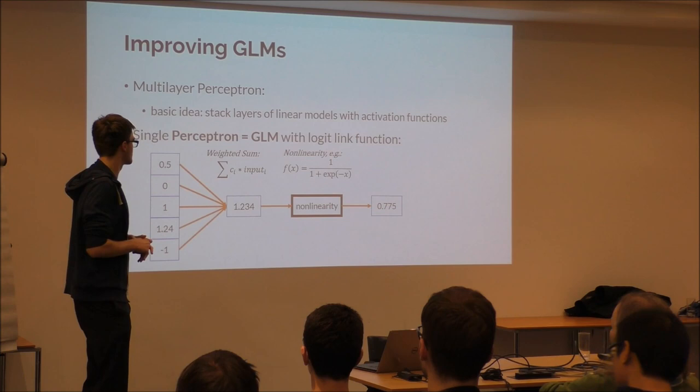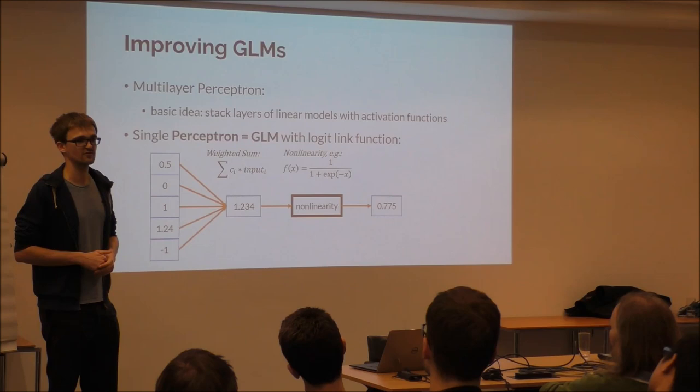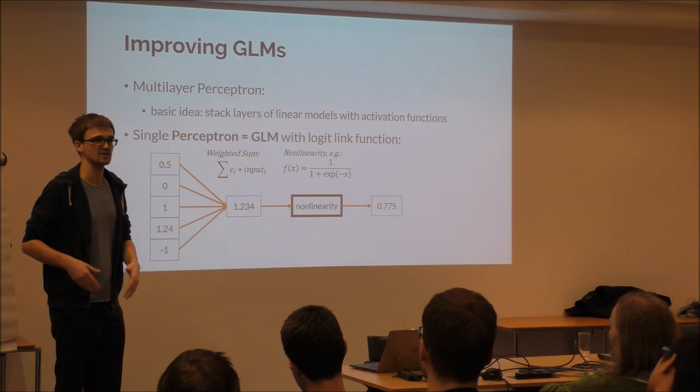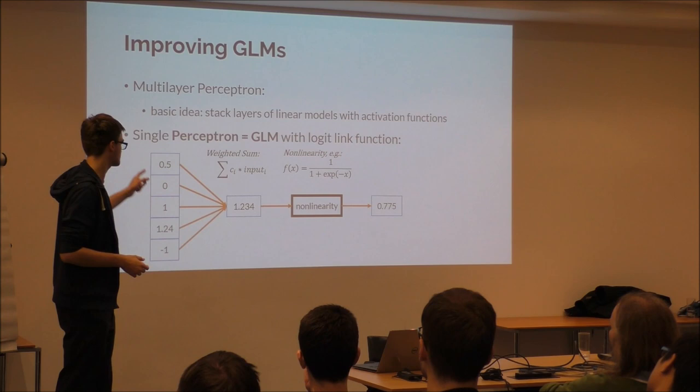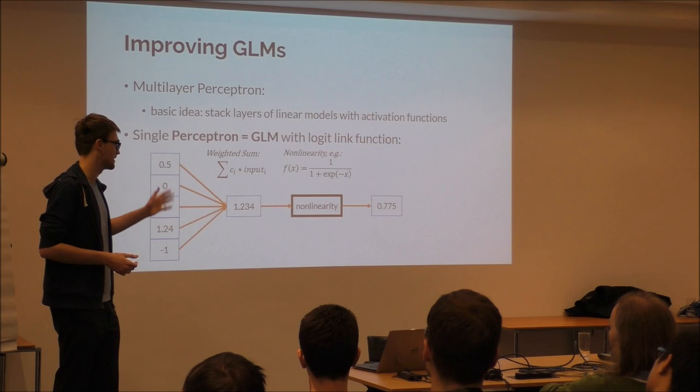So how can you improve GLMs? In deep learning terms, the GLM with the logistic function is called a perceptron. You will see there are always at least two terms for the same thing — one term from statistics, one from computer science. The perceptron is basically a GLM with the logistic function. The way it works: you create a weighted sum of inputs, put it through a non-linear function — in our case the logistic function — and you get a number.